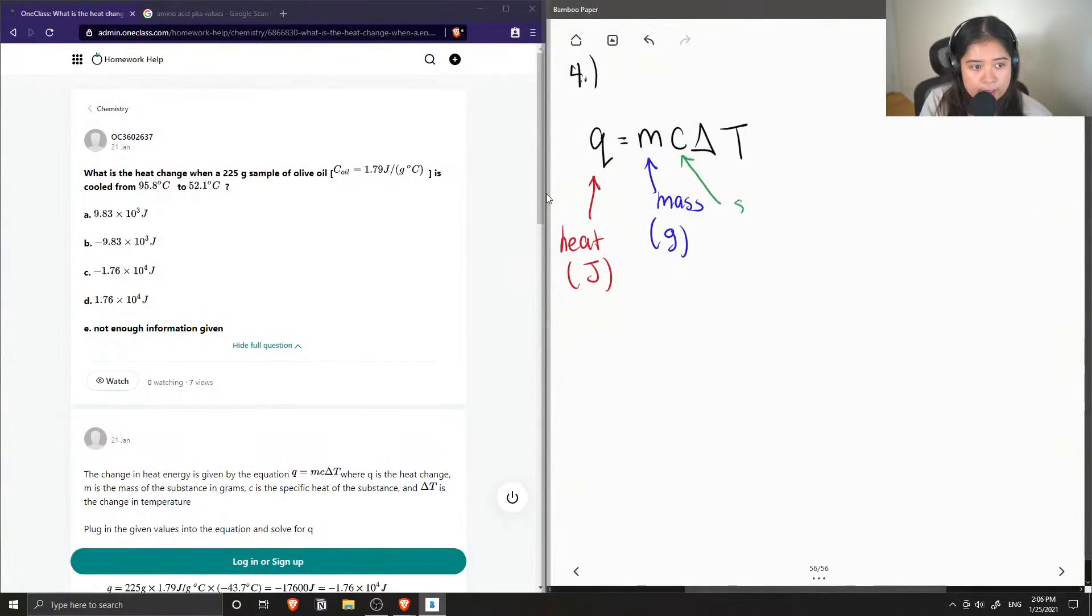C is the specific heat capacity, and depending on the type of compound you have, they each have a specific heat capacity in the units joules over grams times degrees Celsius.